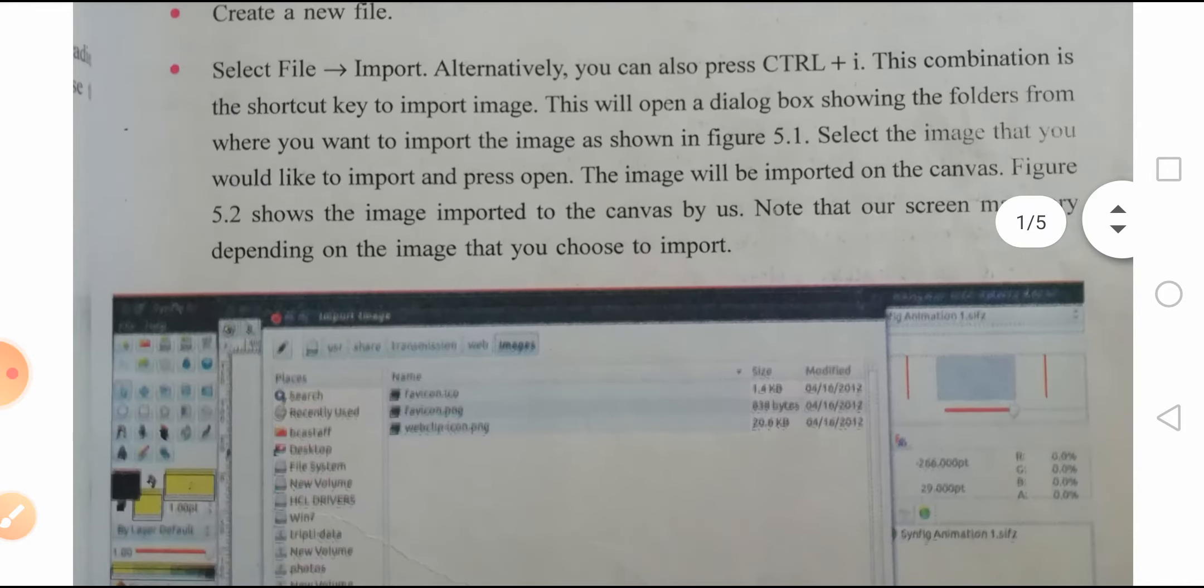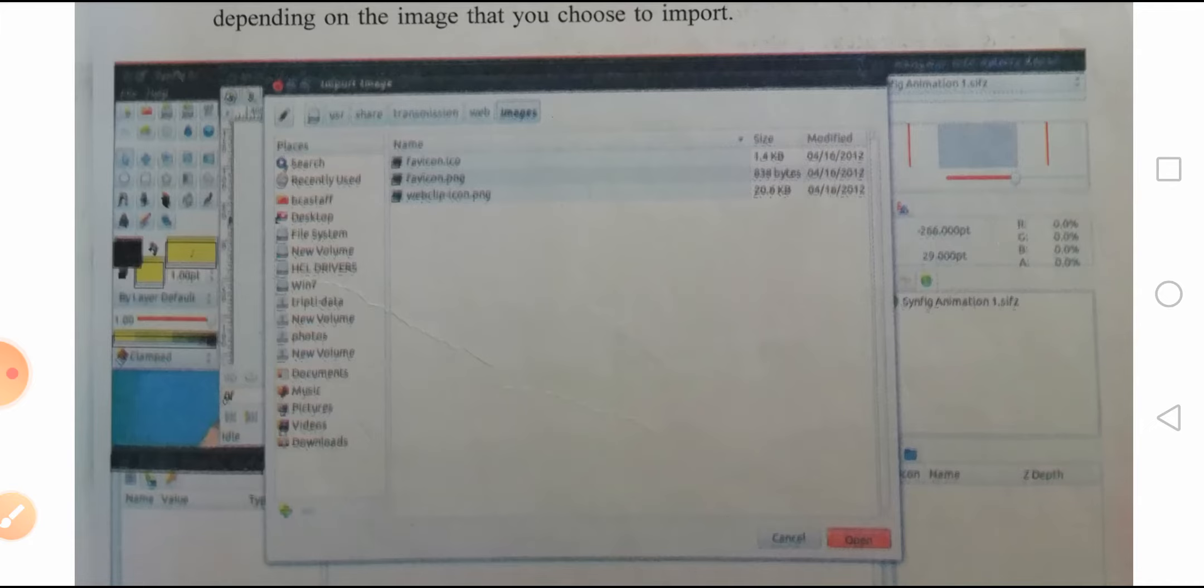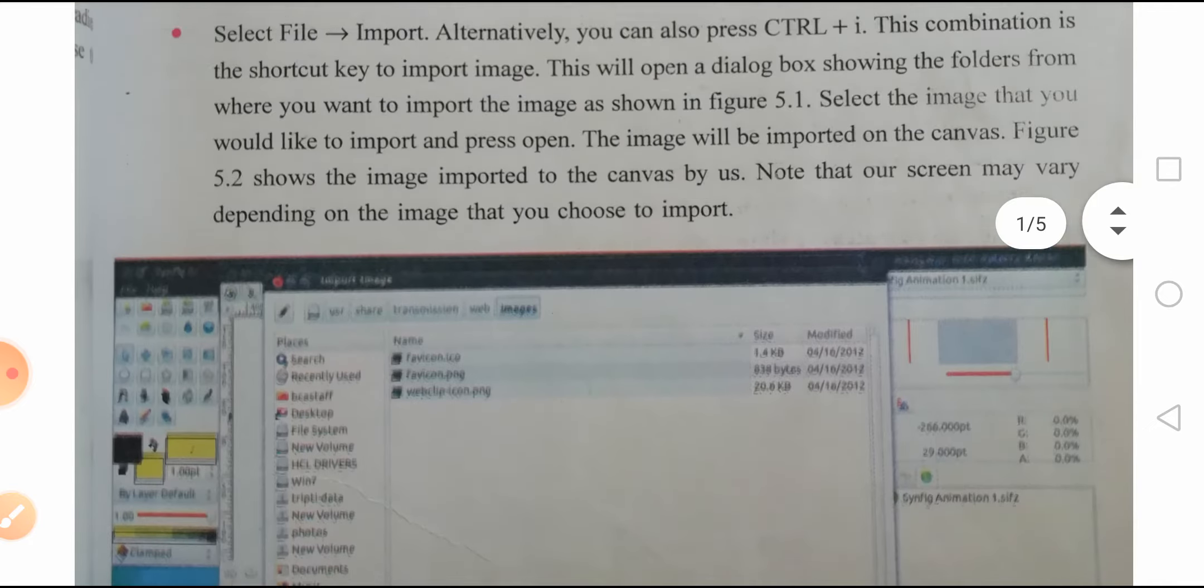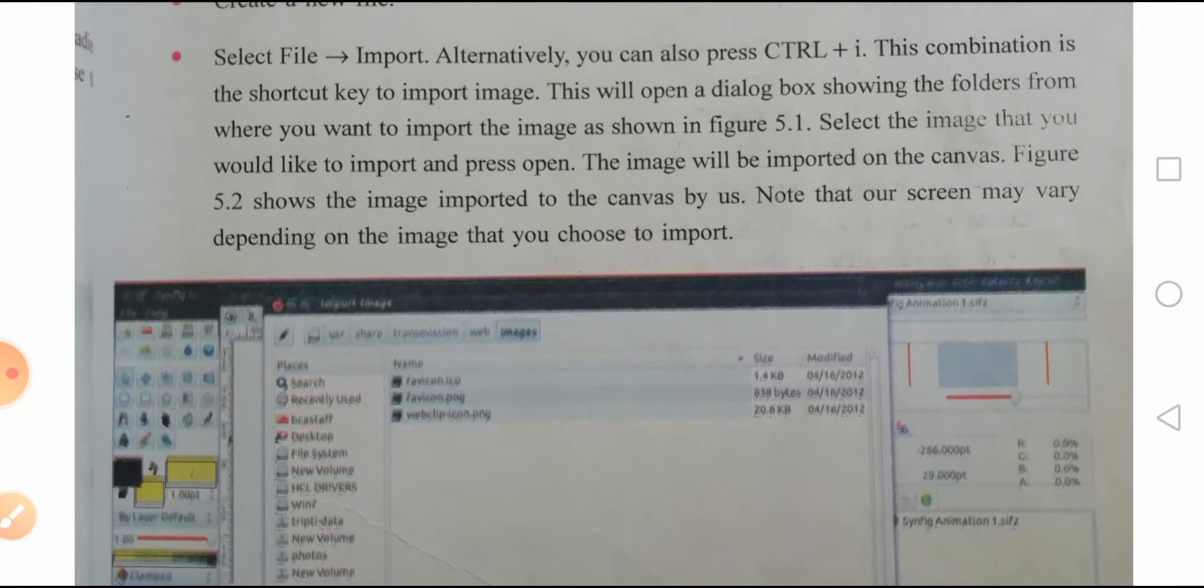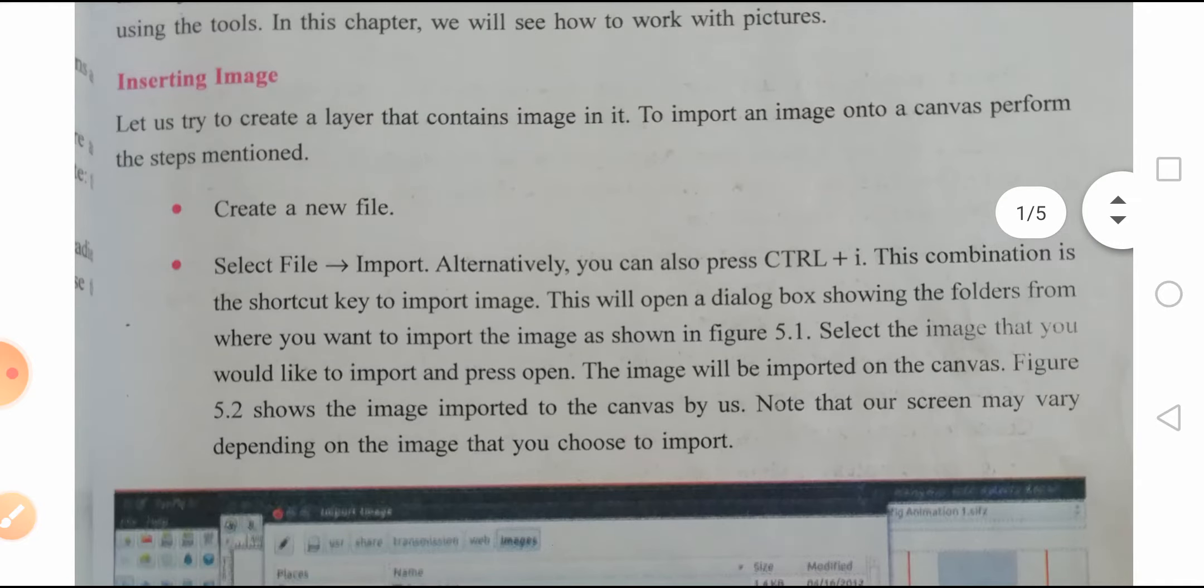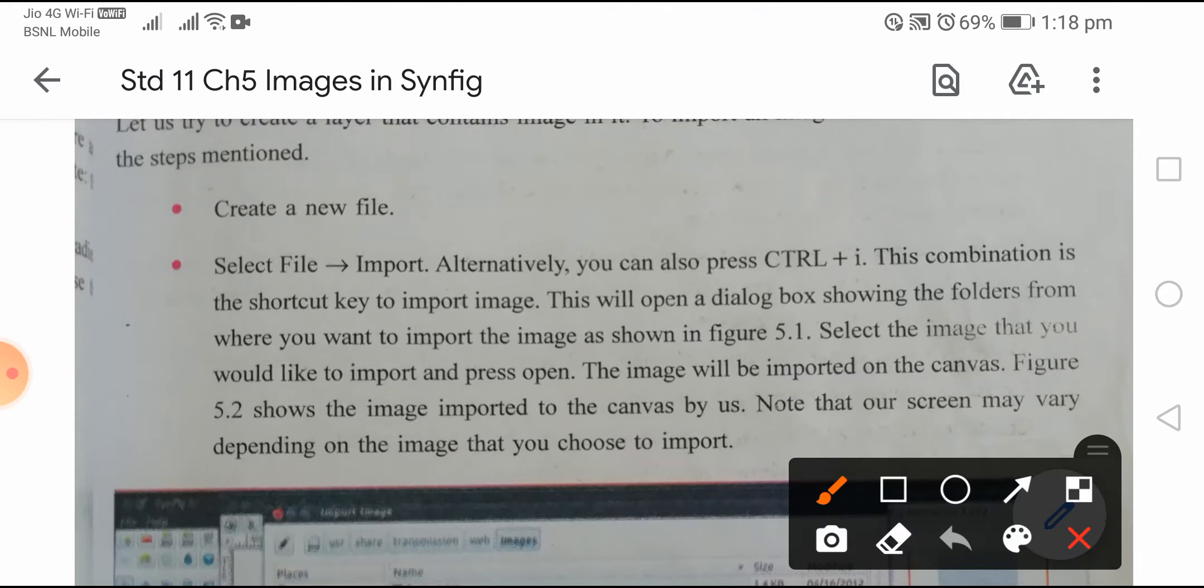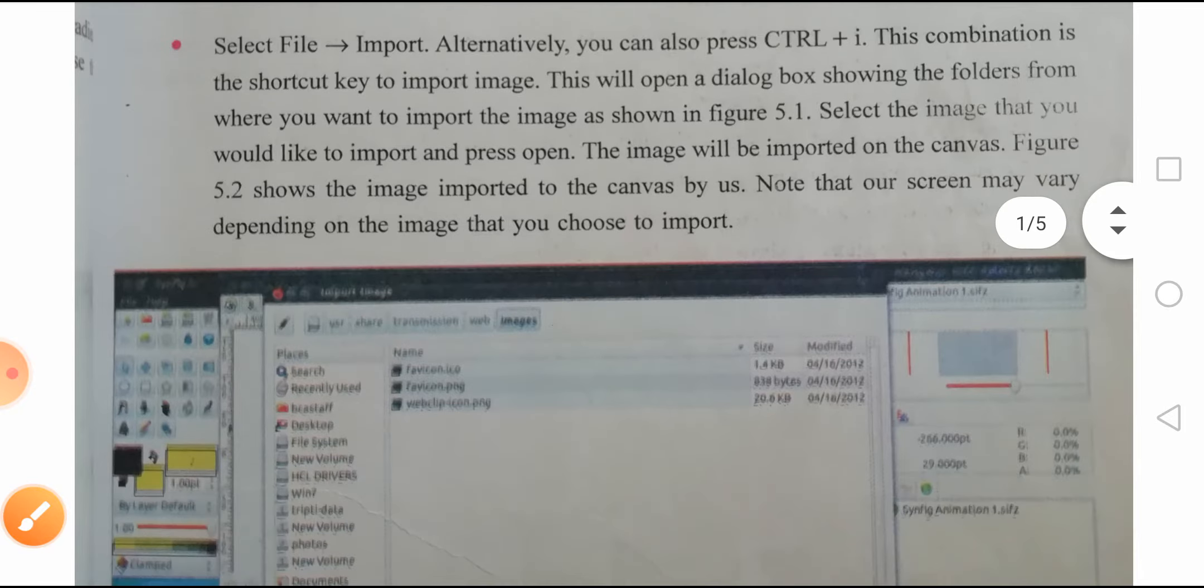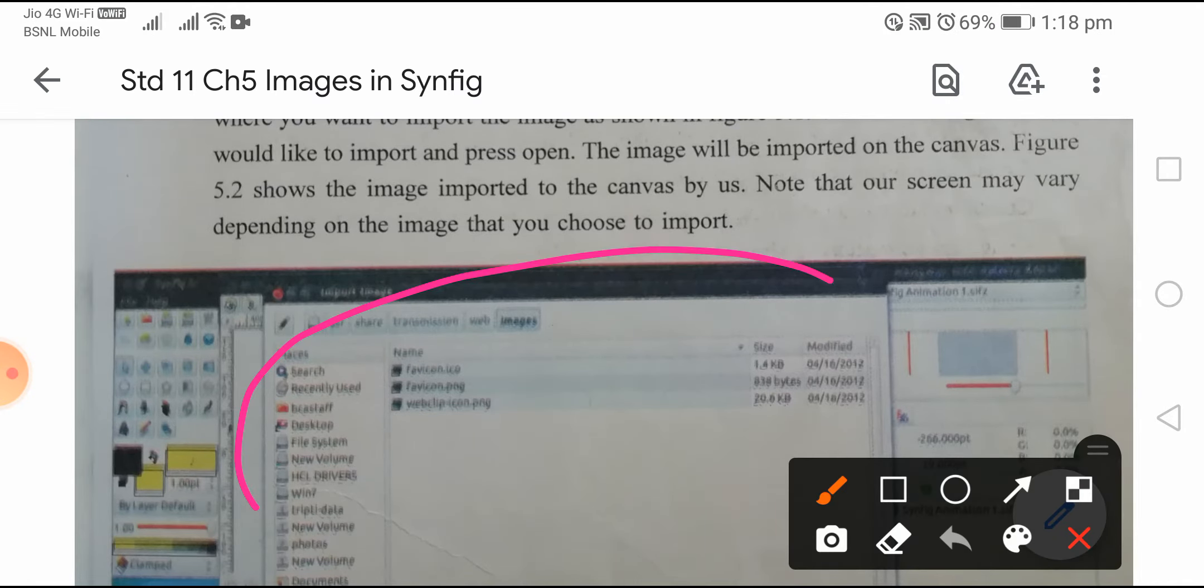Let's look at inserting images. This is the Synfig interface with the toolbox. The first step is to create a new file. Then select File, Import, or alternatively you can use Ctrl+I. With that, a window will open in front of you from where you have to browse the particular folder and select the image.